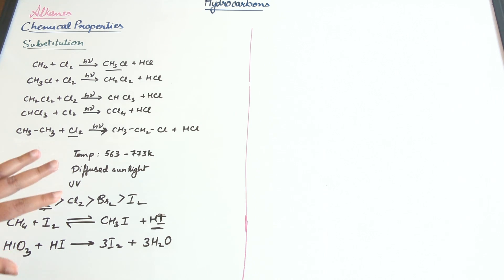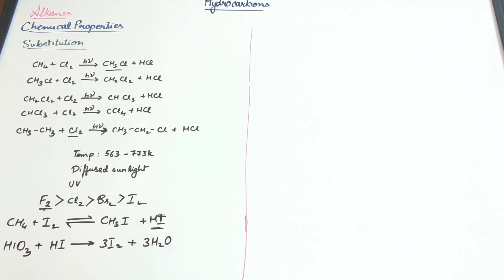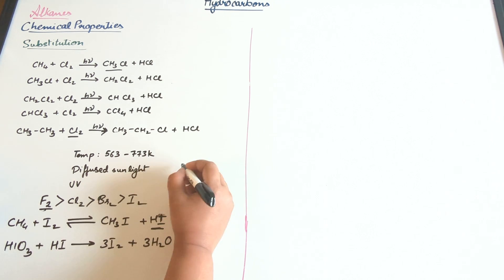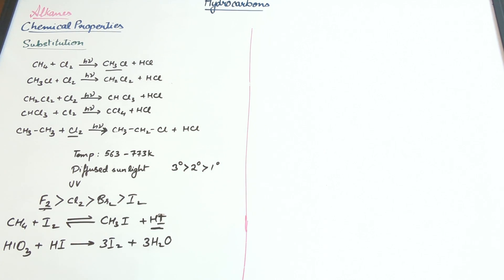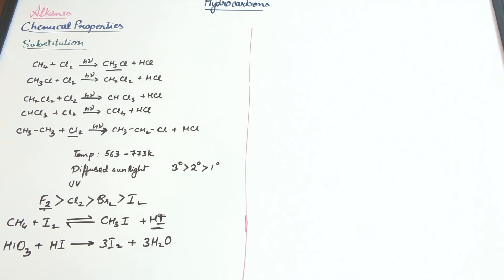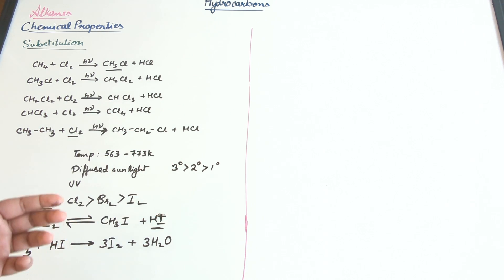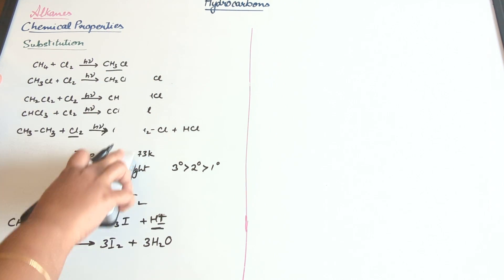The rate of reaction not only depends on the halogen atom, but also on the nature of the carbon atoms. The rate is highest for tertiary carbon, then secondary, then primary. That was the introduction to the substitution reaction of alkanes. Next, we will be looking at the mechanism of this particular reaction.